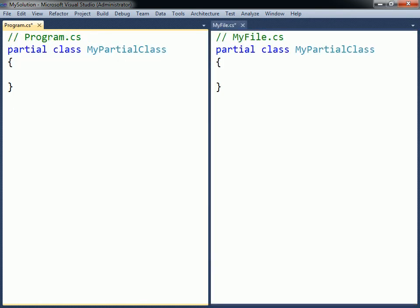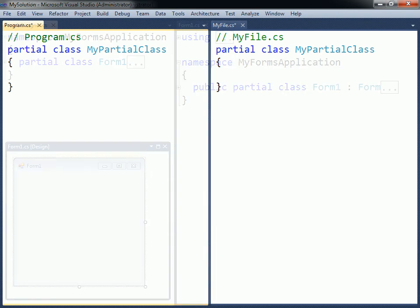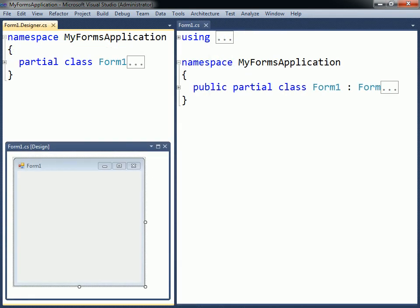A class definition can be split up into separate source files by using the partial type modifier. These partial classes will be combined into the final type by the compiler. All parts of a partial class must have the partial keyword and share the same access level. Splitting classes across multiple source files is primarily useful when part of a class is generated automatically. For example, this feature is used by Visual Studio's graphical user interface builder to separate automatically generated code from manually written code. Partial classes can also make it easier for multiple programmers to work on the same class simultaneously.